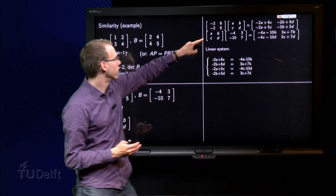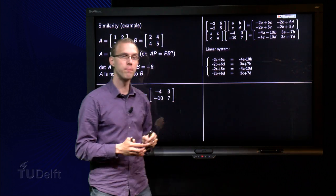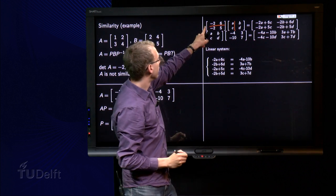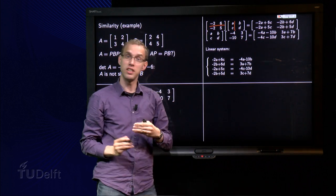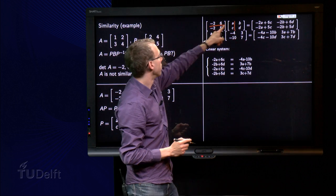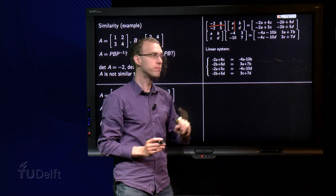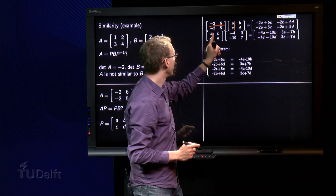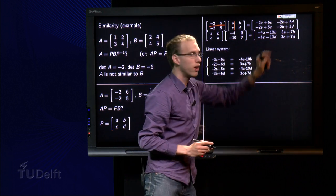So that's what we're doing over here, A times P. So by the row column rule, we get minus 2A plus 6C as the first element, and then we continue with the other ones, minus 2A plus 5C, minus 2B plus 6C over there, and minus 2B plus 5C over there. So that is A times P.